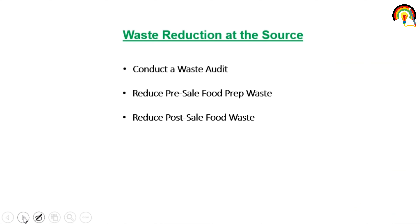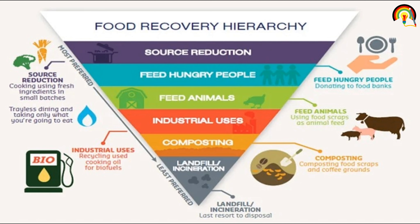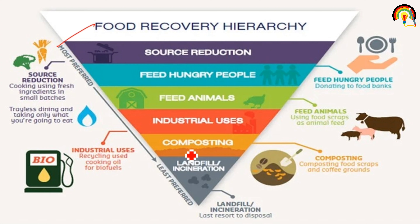Food Recovery Hierarchy — from most preferred to least preferred. Most preferred: source reduction, meaning cooking using fresh ingredients in small batches, trayless dining and taking only what you are going to eat. Then: feed hungry people by donating to food banks. Feed animals using food scraps as animal feed. Industrial uses such as recycling used cooking oil for biofuel. Composting of food scraps and coffee grounds. And lastly, landfill or incineration as a last resort.